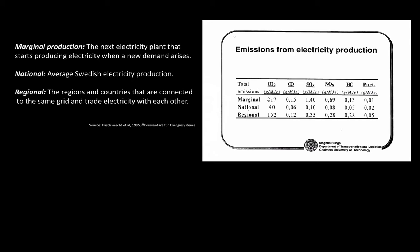The other approach is to use a national average. In Sweden, the national average electricity production is 50% hydropower, 45% nuclear power, and about 5% fossil power. Using the national grid gives a totally different result than using the marginal approach, as you can see in this picture. You could also claim that electricity is traded between regions and countries, so you should use the regional grid average instead — and as you can see, that also gives a totally different value.